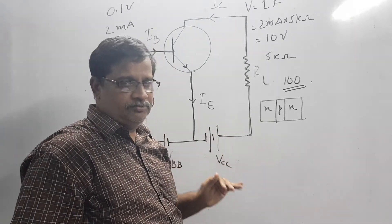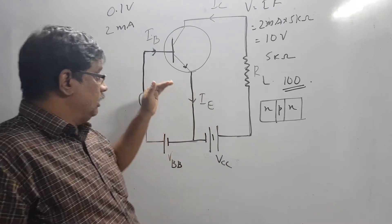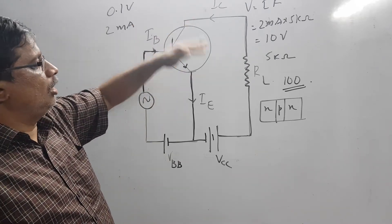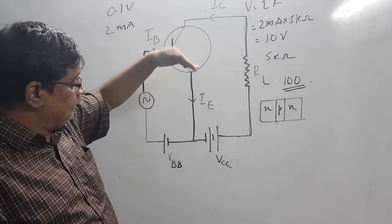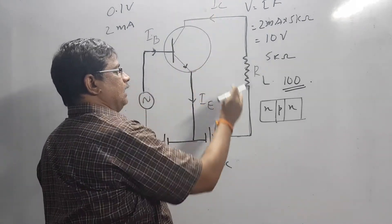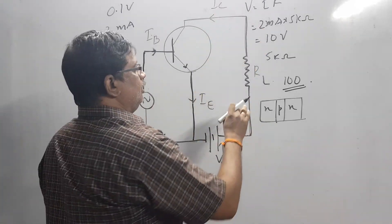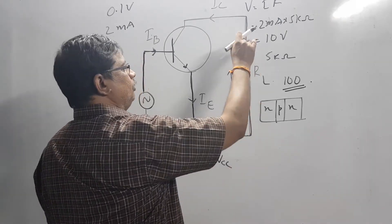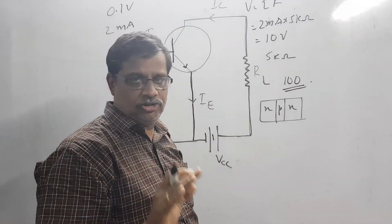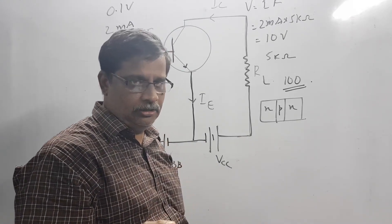This is how the transistor amplifies: any small change in the base current results in almost the same proportional change in the collector current, and that collector current flows through a high-value load resistor, producing a much higher output. This is essentially what amplification means — raising the strength of a signal without changing its overall shape.